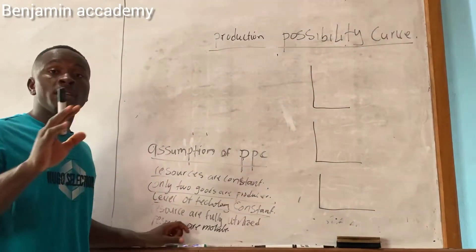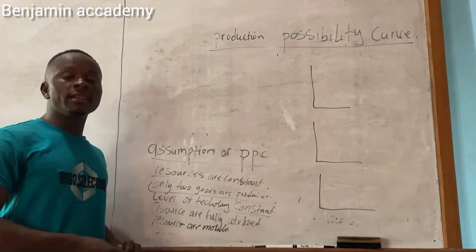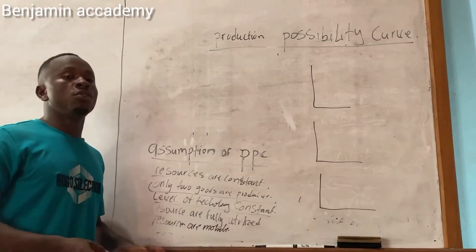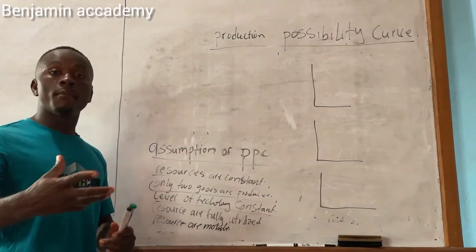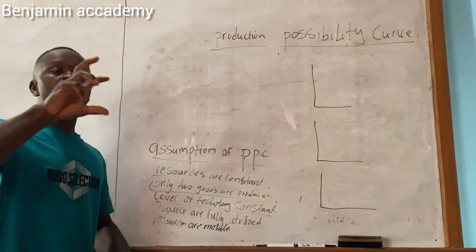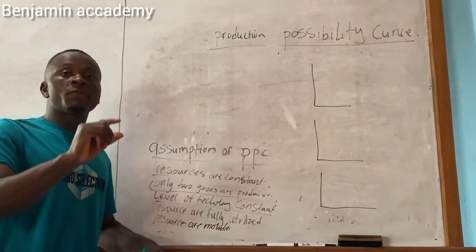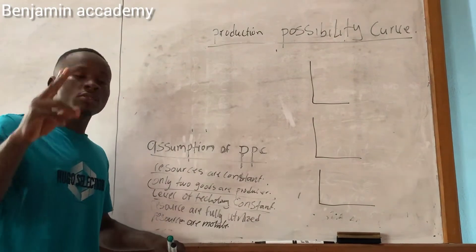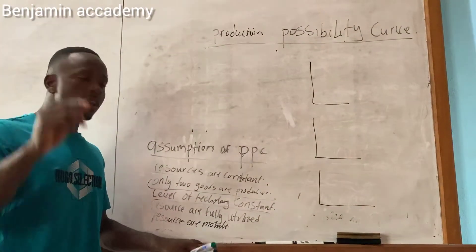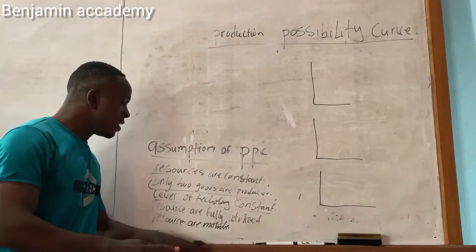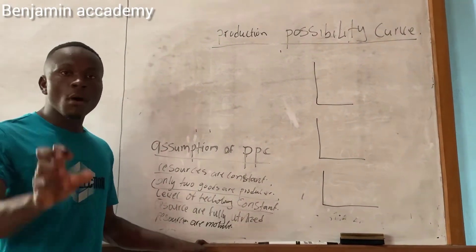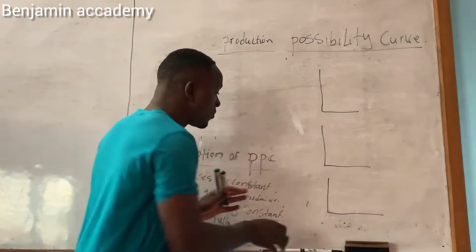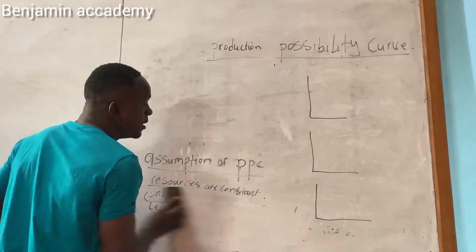The fourth assumption is that resources are fully utilized — the resources brought in must be fully utilized. The fifth assumption is that resources are mobile. So to summarize: resources are constant, only two goods are produced, technology is constant, resources are fully utilized, and resources are mobile.